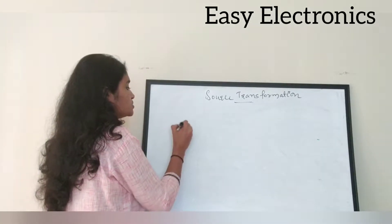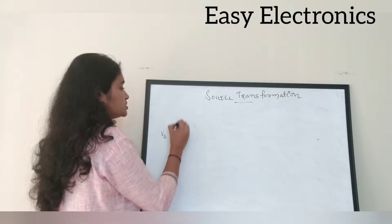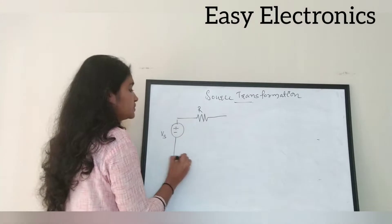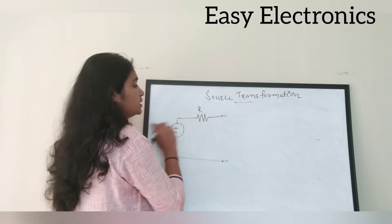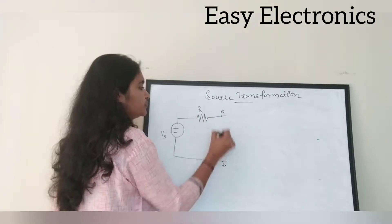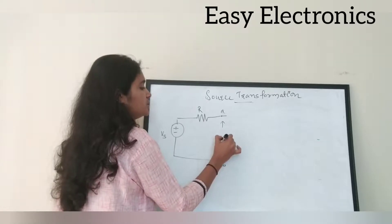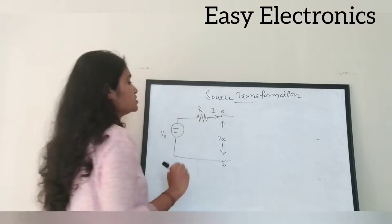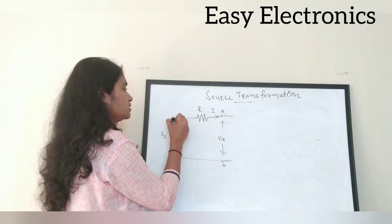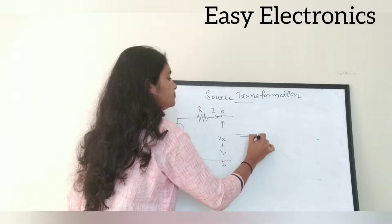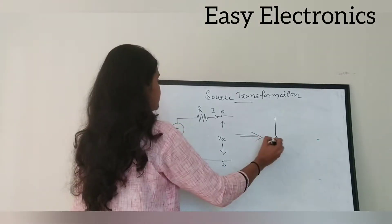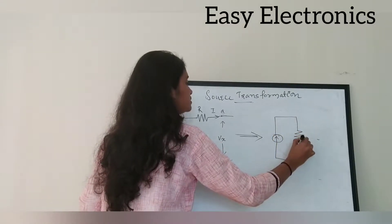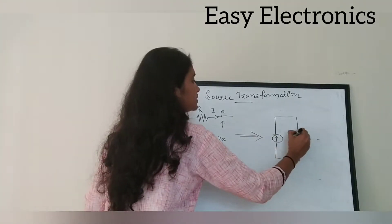I am going to consider a voltage source here. Let the voltage be Vs, that is V source. I have a resistor connected in series with the voltage source. I have two points A and B; the voltage across these points is Vx, and the current flowing to point A is I. So I can convert this voltage source to a current source, by taking the same resistor connected in parallel with the source.